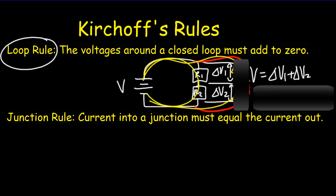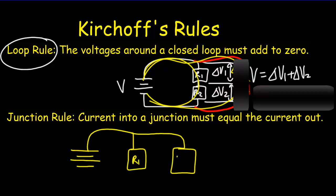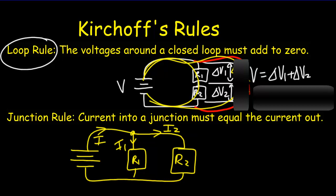Then we've got a junction rule, which says that - at least for our purposes - if we've got two resistors R1 and R2 in parallel, there's a certain current coming out of the battery that splits at the junction. We'd have a certain current I1 going into R1 and a certain current I2 going into R2, and our junction rule simply says that I has to equal I1 plus I2.